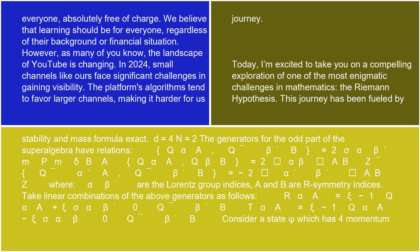For d=4, N=2, the generators for the odd part of the superalgebra have relations: {Q_α^a, Q_β^b} = 2σ_αβ^m P_m δ^{ab}, {Q_α^a, Q_β^b} = 2ε_αβ ε^{ab} Z, {Q̄_α^a, Q̄_β^b} = -2ε_αβ ε_{ab} Z̄, where α, β are the Lorentz group indices and a, b are R-symmetry indices.